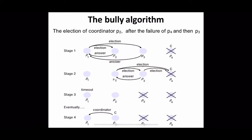Now suppose that before p3 can send out the coordinator message, it too fails. In stage 3, p3 also fails. After some time, p1 will time out, deduce the absence of a coordinator message, and begin another election. Eventually, p2 is announced as coordinator because p1 receives a coordinator message from p2 and accepts p2 as coordinator.